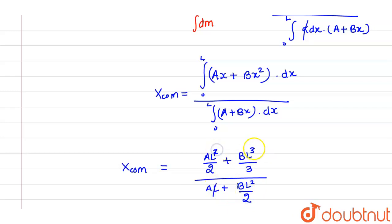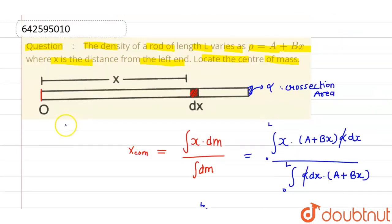Now this L will cancel out and here we are left with 2, and here only L. So this will constitute as al by 2 plus bl square by 3 divided by a plus bl by 2. So this is the x coordinate of center of mass or location of center of mass from this particular point O.